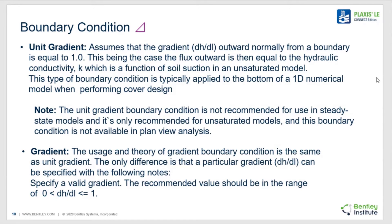It is also useful in some scenarios to have the user specify a gradient boundary condition. In this boundary condition, the flow out of the model is calculated based on Darcy's law. Hydraulic connectivity is determined based on the unsaturated function and the gradient is considered fixed. A typical application is to specify the gradient as 1.0. A particular non-unit gradient can also be specified as a boundary condition. Often these boundary conditions are utilized at the bottom boundary of a 1D numerical model, which would mobilize flow vertically.